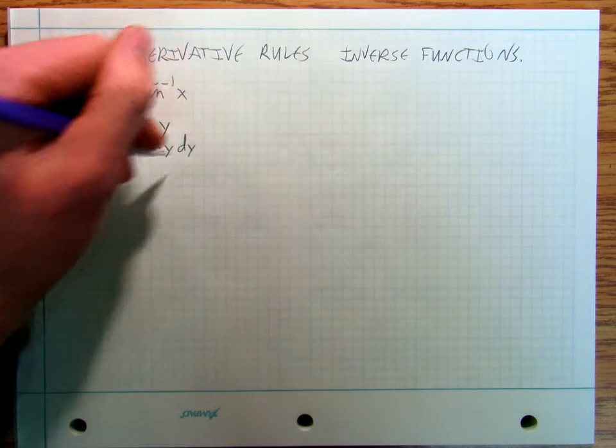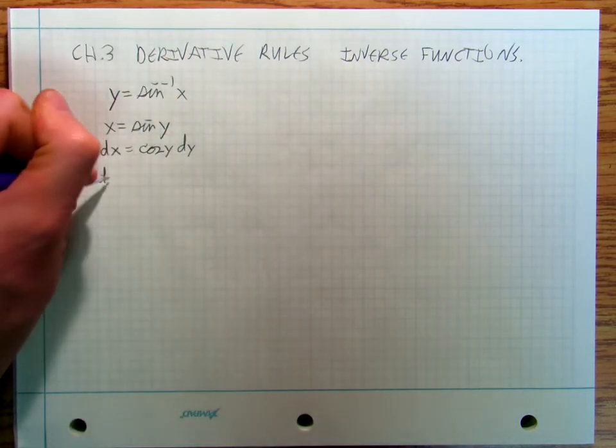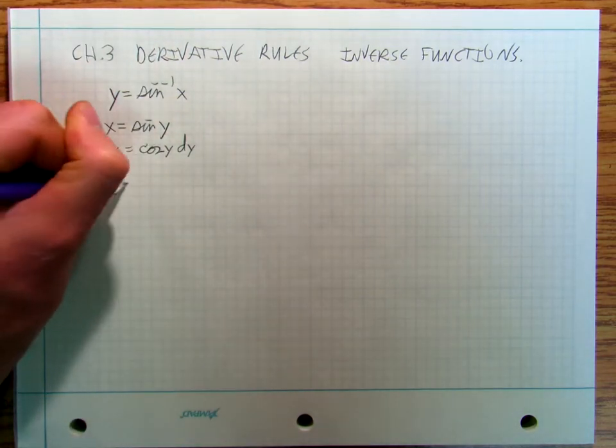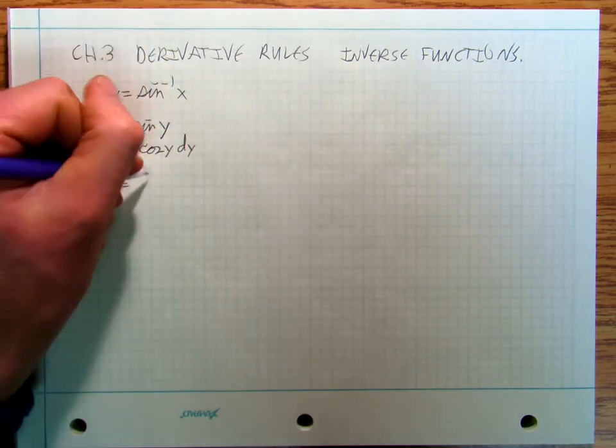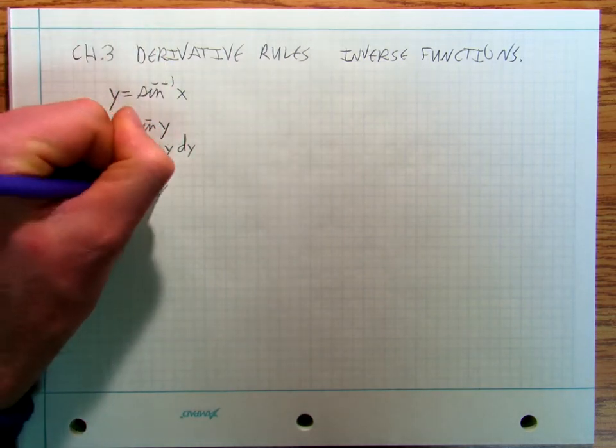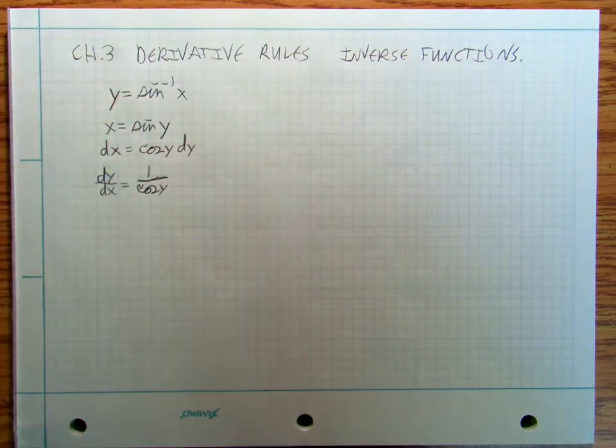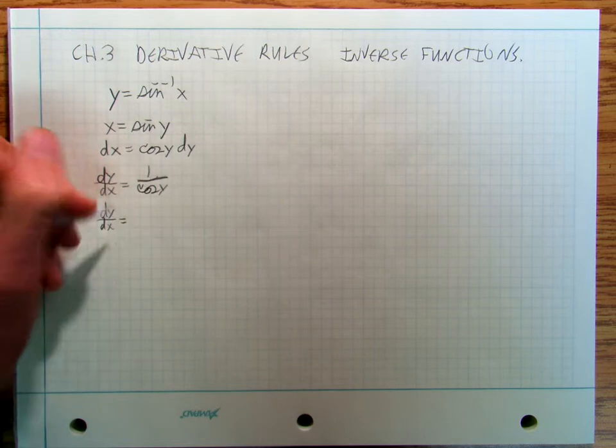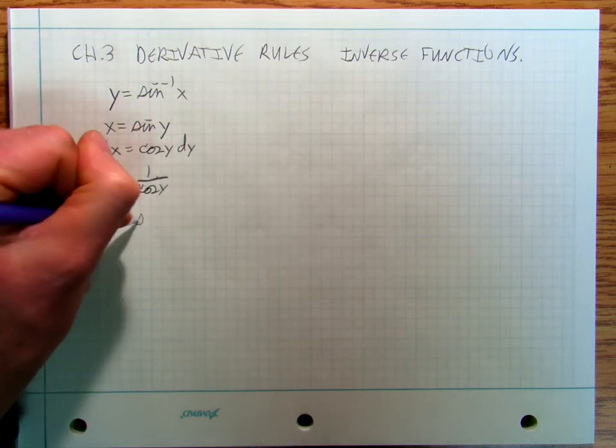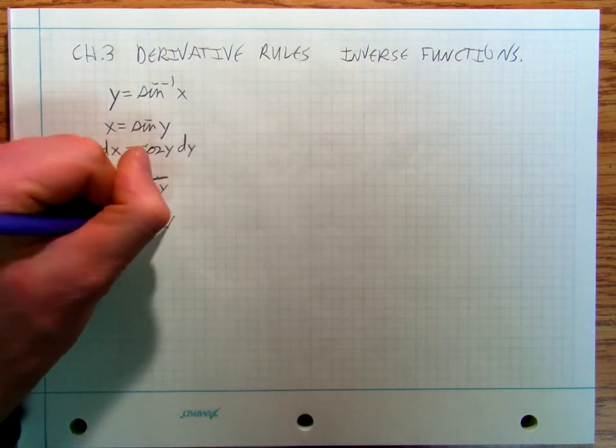And so then I can use algebra to solve that to get dy over dx is equal to 1 over cosine y. And so dy over dx is equal to secant y.